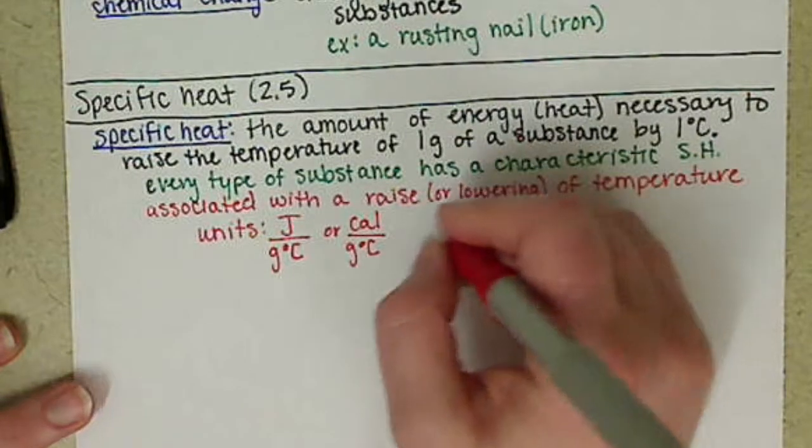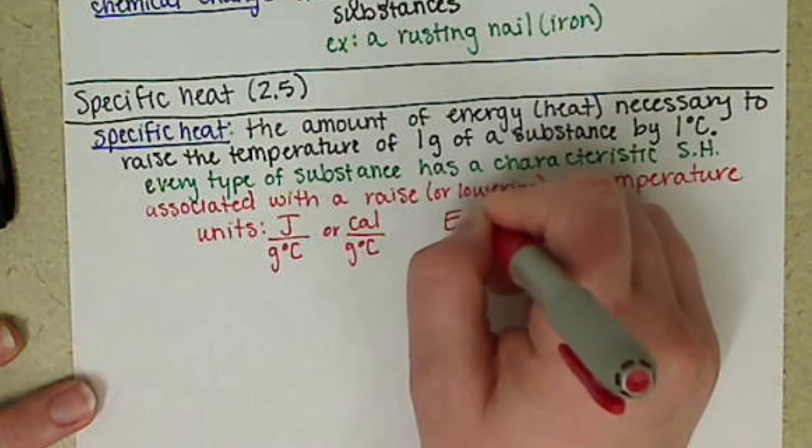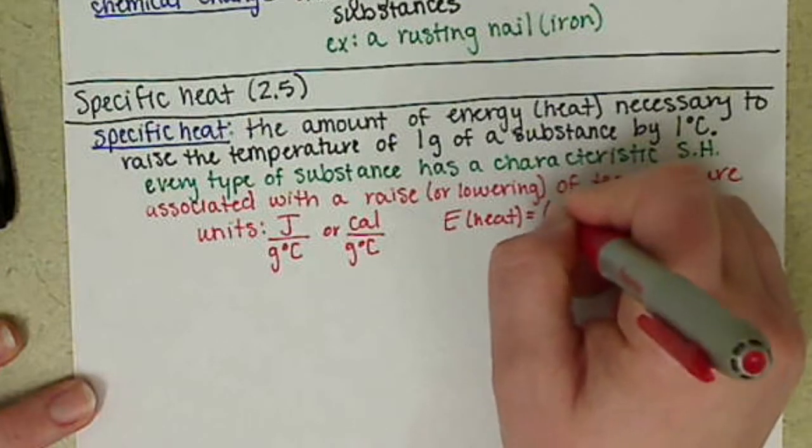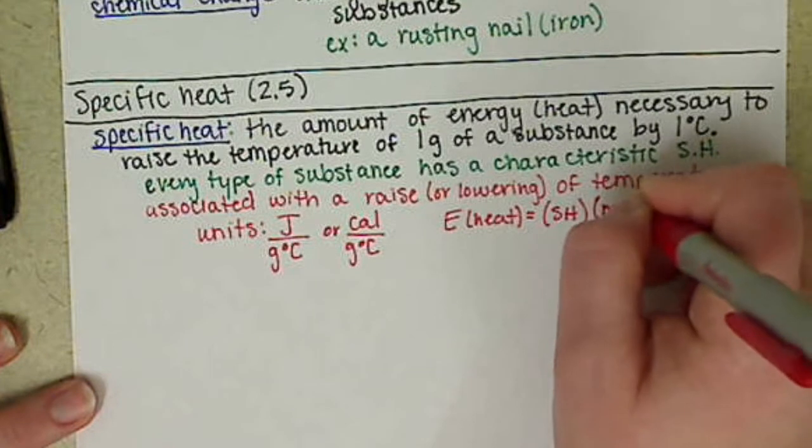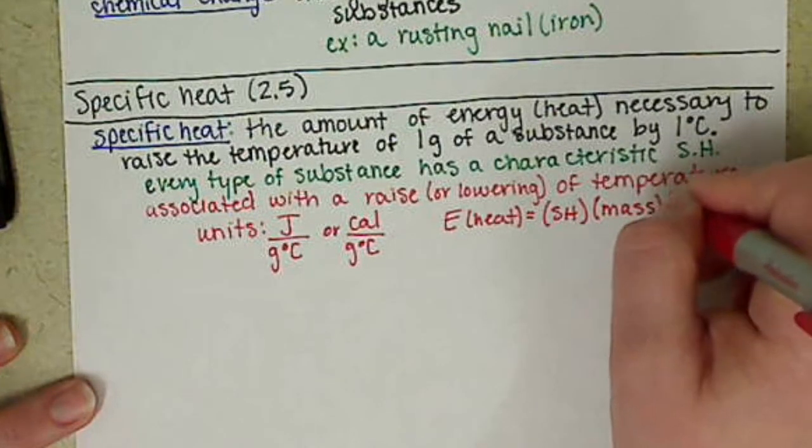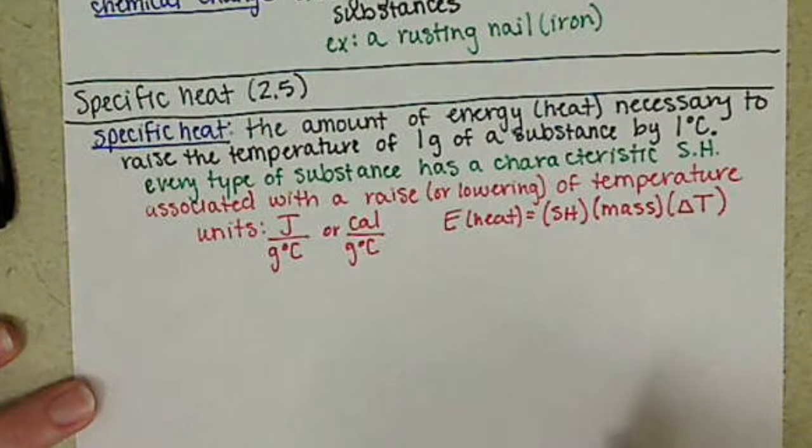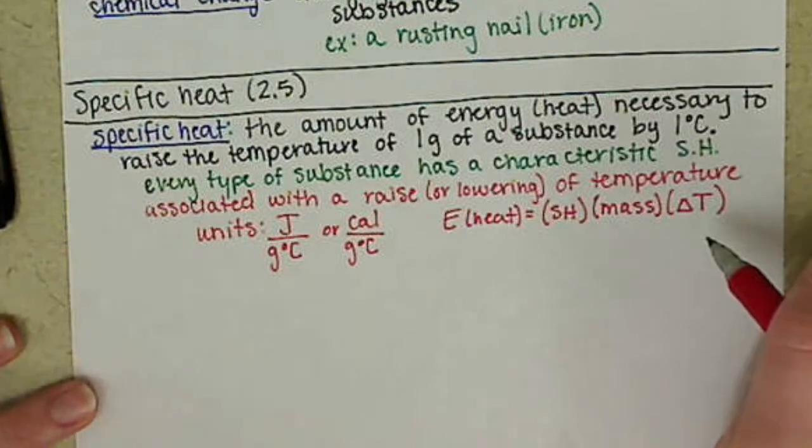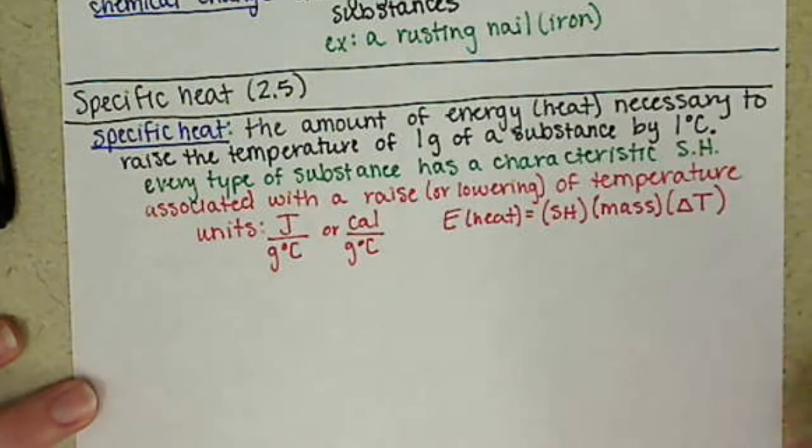And the equation for this is our energy or our heat is equal to the specific heat times the mass times our change in temperature. We have delta T. So this little triangle here, it's not actually a triangle, it's a delta. It's a Greek letter.